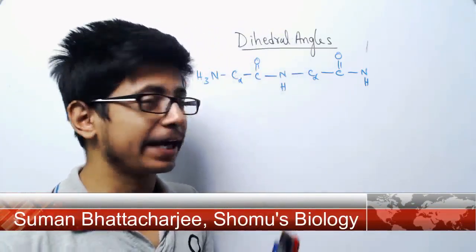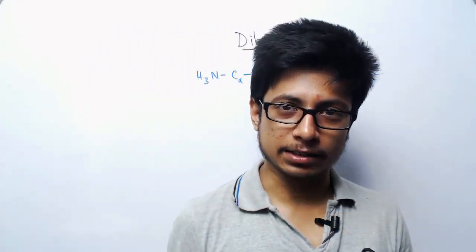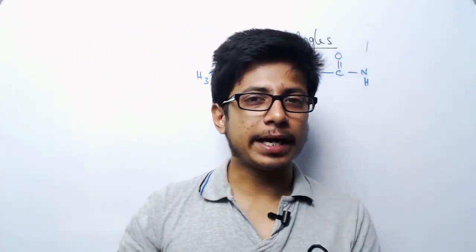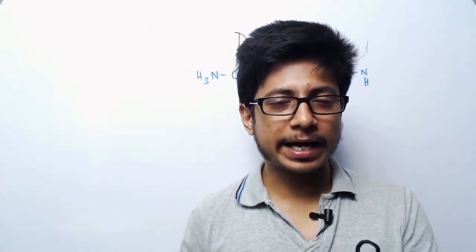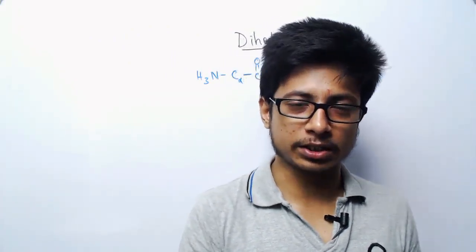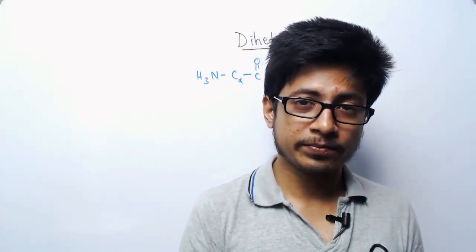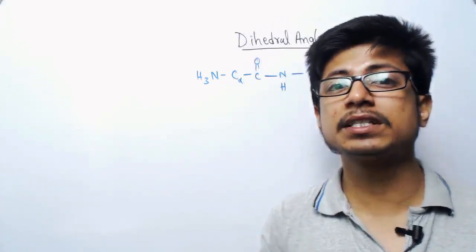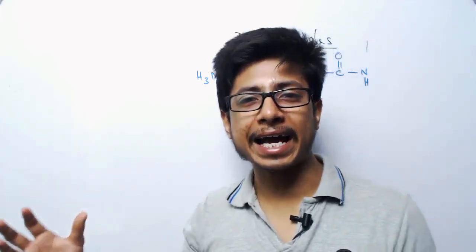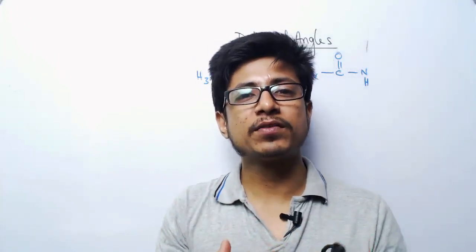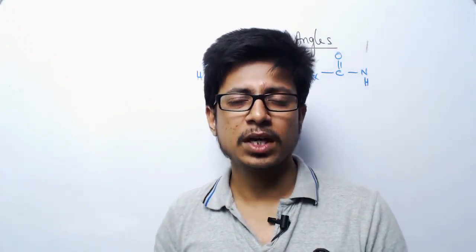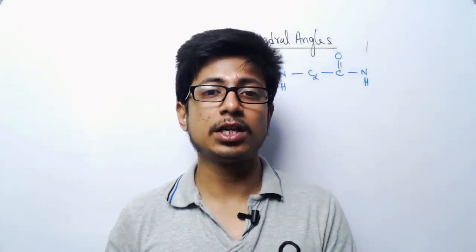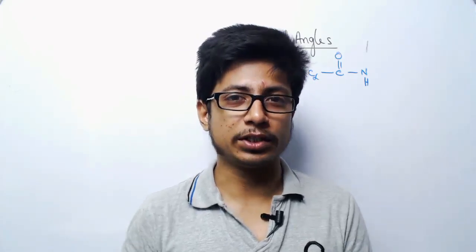Welcome back friends. Welcome to another video tutorial from Shromos Biology. In this video lecture, we will be talking about dihedral angles, which are also known as torsional angles. We will talk about the importance of dihedral angles in maintaining the protein structure, especially the protein secondary structure, and we will also talk about the Ramachandran plot, which gives us the idea about what kind of torsional angle will ultimately fit to what type of secondary structure of the proteins. Let's see the relation between torsional angles, the Ramachandran plot, and protein structure.